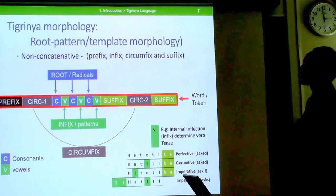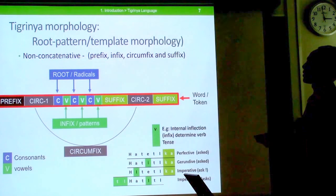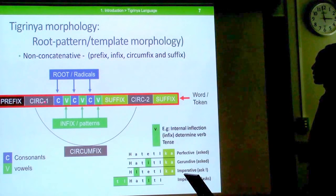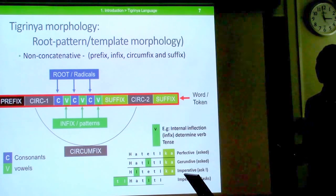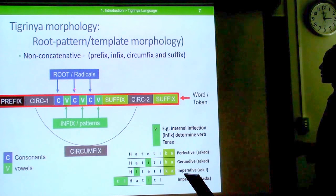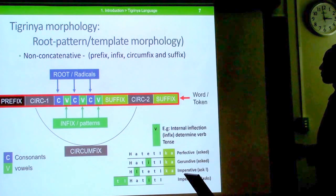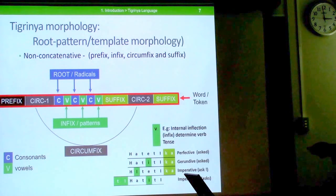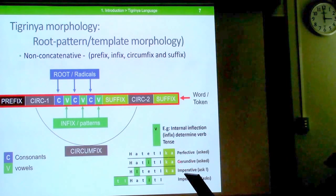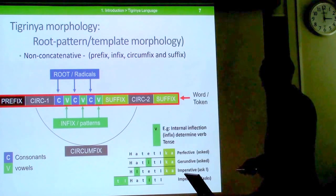Tigrinya morphology is known as root-pattern or root-template morphology — a non-concatenative type of morphology, meaning affixes such as prefix, infix, and others are not necessarily found in sequential order. There is a prefix, a circumfix split between prefix and suffix positions. The roots contain only consonants, and the infixes or patterns contain vowel alternations. Through these internal inflections, the tense, aspect, and mood of verbs are changed.